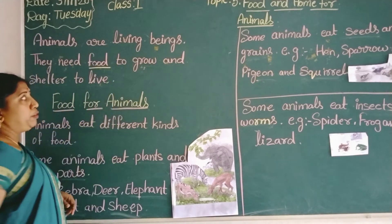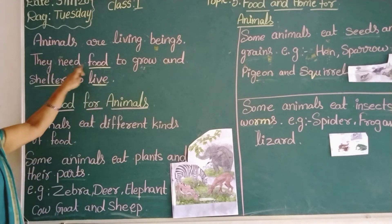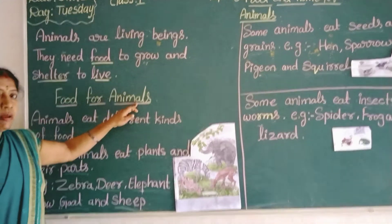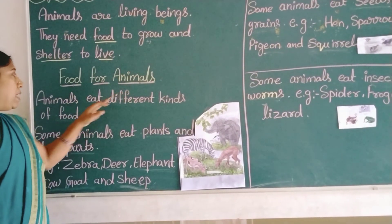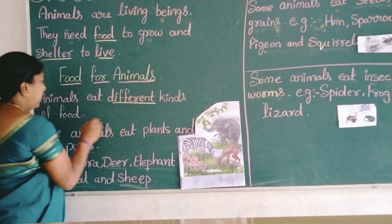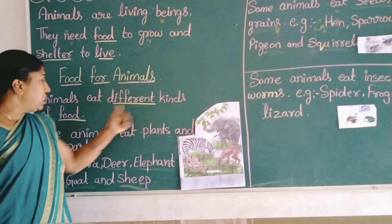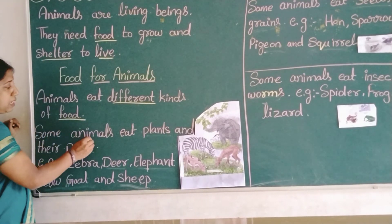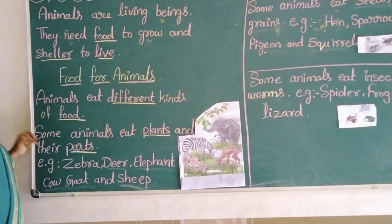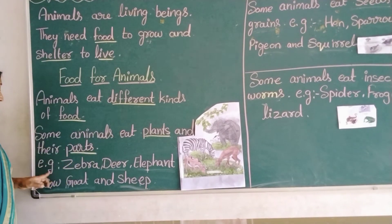They need food to grow and shelter to live. Food for animals — animals eat different kinds of food. Some animals eat plants and their parts.